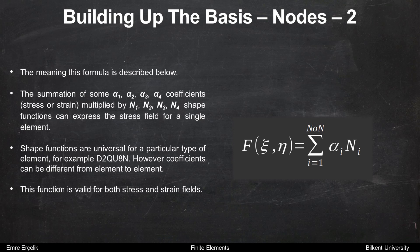This function means the summation of some alpha1 to alpha4 coefficients multiplied by N1 to N4 shape functions can express the stress or strain field for a single element. Again, shape functions are universal, however coefficients can be different. This function is valid for both stress and strain fields.